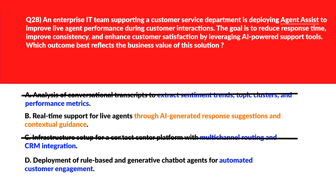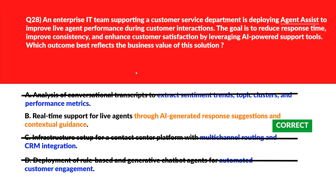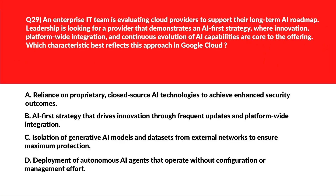Option D says deployment of rule-based and generative chatbot agents for automated customer engagement. Chatbot deployment automates support but doesn't enhance human agent workflows — wrong answer. Lock Option B as the right choice.